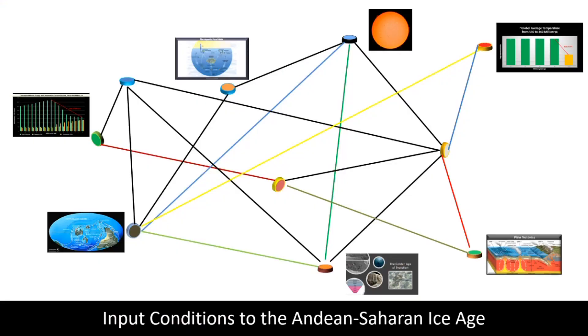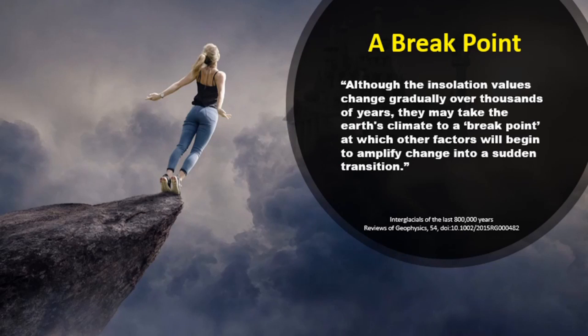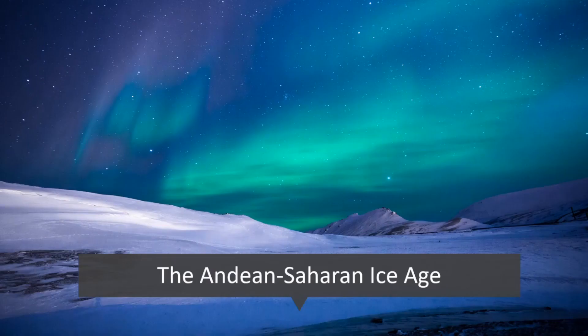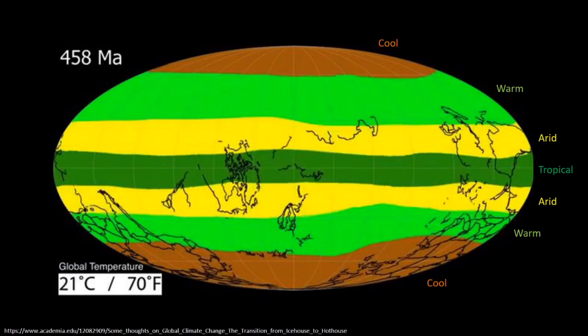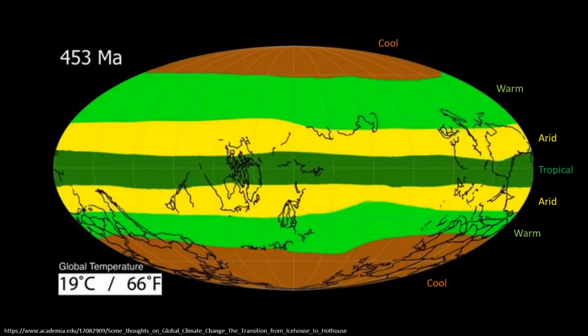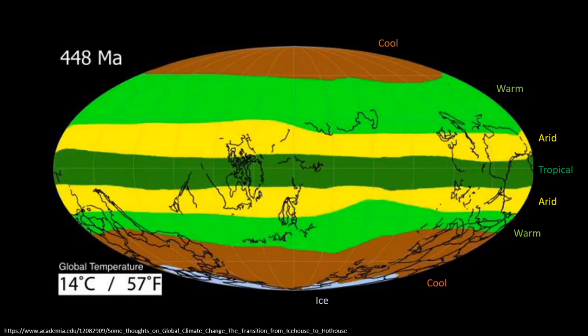We can now complete the causal network by adding the Milankovitch cycles. This study of interglacials nicely sums up the situation when it says a break point or tipping point is reached where factors come together to produce a sudden transition. And thus the Andean-Saharan Ice Age started. It continued and temperatures fell so that by approximately 448 million years ago, the global temperature had dropped to around 57 degrees Fahrenheit.